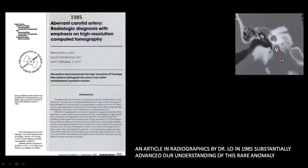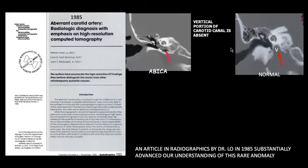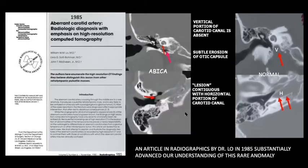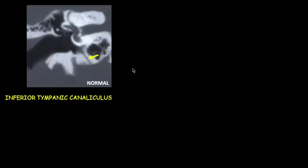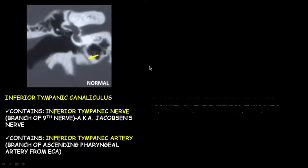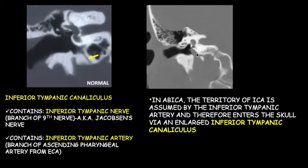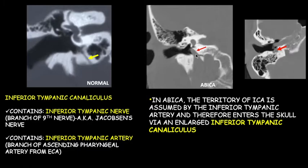In aberrant internal carotid artery, the vertical portion of the carotid canal is absent and there is often subtle erosion of the otocapsule due to pulsations. The aberrant artery is contiguous with the horizontal portion of the canal. Dr. Lowe also described in detail the anatomy of the normal inferior tympanic canaliculus, which contains the inferior tympanic nerve and artery. The territory of the internal carotid artery is assumed by the inferior tympanic artery, which therefore enters the skull via an enlarged inferior tympanic canaliculus. Thirty percent of these patients have a persistent stapedial artery.